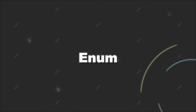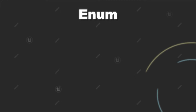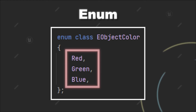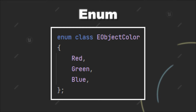Today we will have a look at enums and how you can use them in C++ for Unreal Engine. First of all, what is an enum? An enum is a special data type that lets you define a set of named constants. Using an enum makes sense when you know that a variable of this type can only be a value of a small set of possible values.